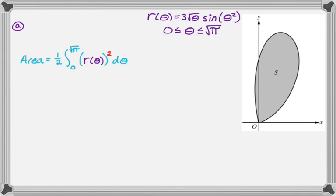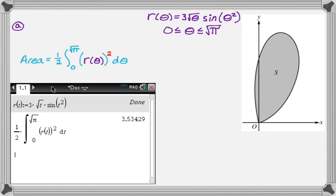This is definitely a calculator problem, so I'm going to show you what I did on my calculator. I defined r of t. I always use t because it's easier to get to on the keyboard than theta. So I defined r of t, and then I just punched it straight in. And so I'm going to say this area is approximately 3.534.